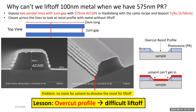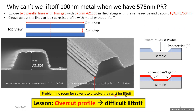Overcut means the top opening is wider than the bottom. Even though the resist is very thick, when you do metal deposition, not only the top surface gets coated — this side surface will also be coated with metal. When this happens, the solvent cannot gain access to the resist even though the resist is thick, and therefore cannot dissolve it to do liftoff. The lesson learned: this kind of overcut profile makes liftoff very difficult.